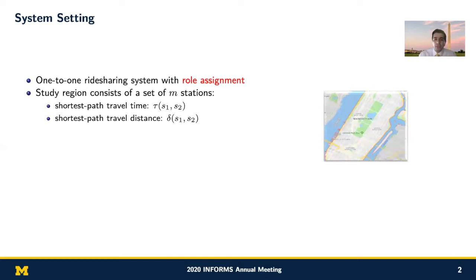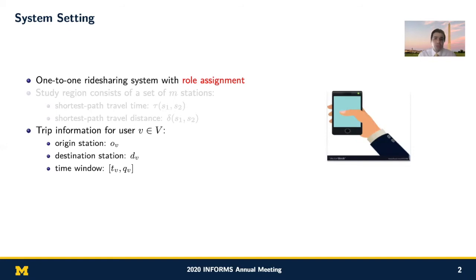We also assume that our system operates in a region that consists of M stations. For this region, the shortest path travel time and distance between every two stations are given in matrices tau and delta, respectively. Also, in this study, we assume a static ride-sharing system, in which all the information is known prior to making a decision by the operator. Every day, a subset of users register their trip in the system, and the trip information includes origin and destination, and time windows.